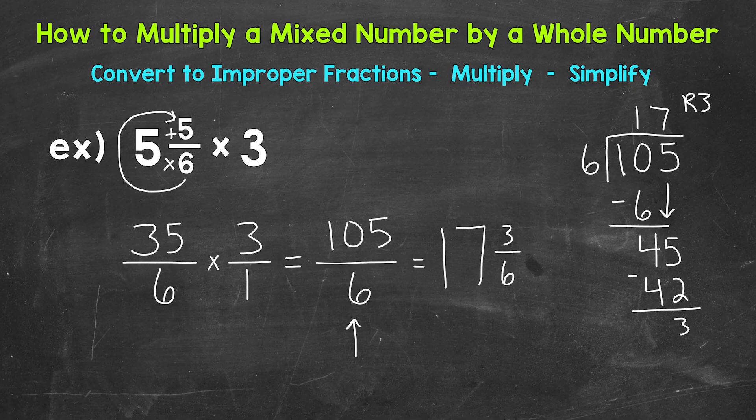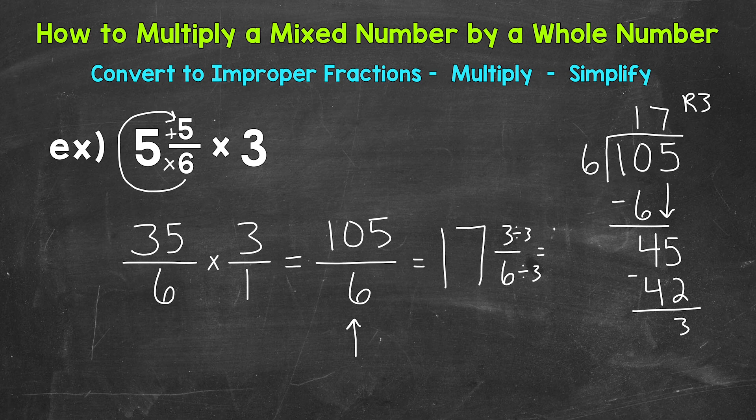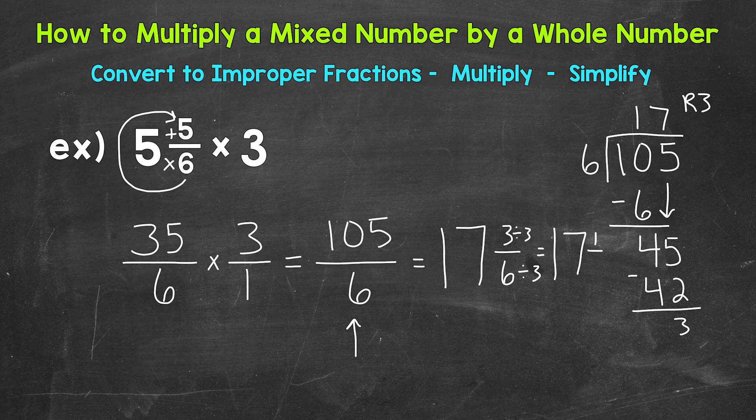Always check to see if you can simplify the fractional part of a mixed number. And in this case, we can. We have a common factor of 3 between 3 and 6. So let's divide both of these by 3 in order to simplify. And we get 17. 3 divided by 3 is 1, and 6 divided by 3 is 2. So we get 17 and a half for our final simplified answer.